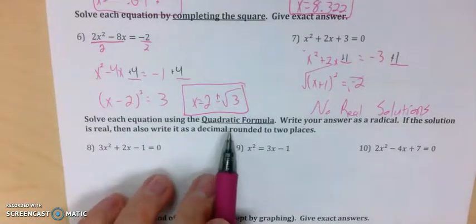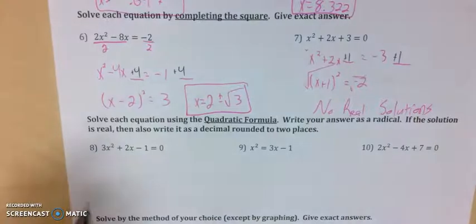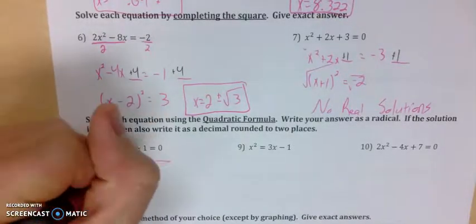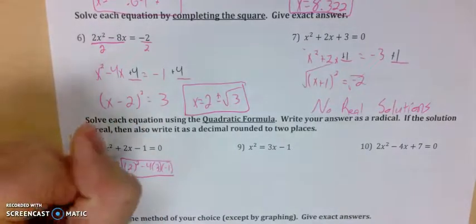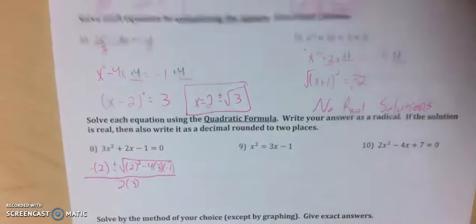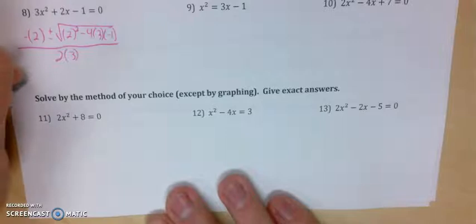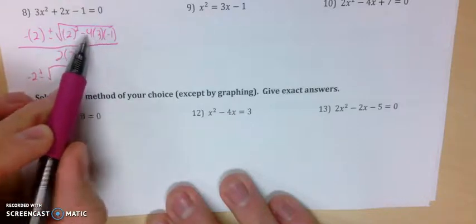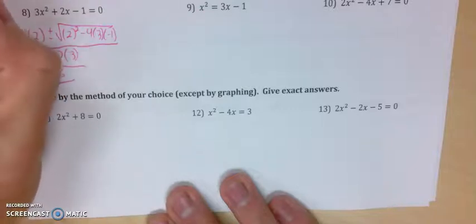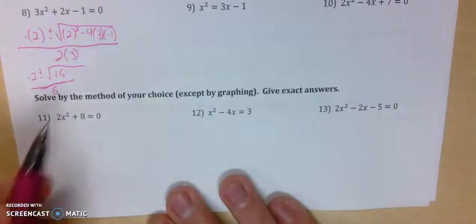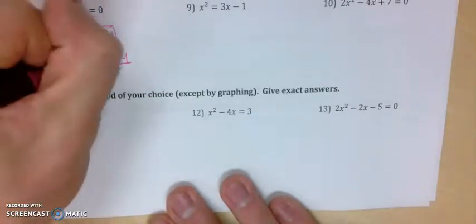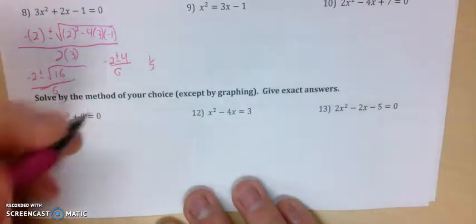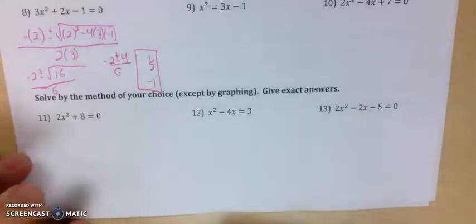Next up is the quadratic formula — remember it will always work, even when completing the square is not ideal or factoring doesn't work. The formula is negative b plus or minus the square root of b squared minus 4ac, all over 2a. For number 8, this gives me negative 2 plus or minus the square root of 4 plus 12, which is 16, all over 6. The square root of 16 is 4, so I have negative 2 plus or minus 4 over 6. Negative 2 plus 4 is 2 over 6, which is 1/3. Negative 2 minus 4 is negative 6 over 6, which is negative 1.